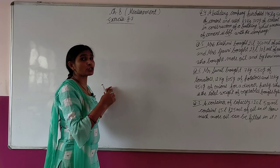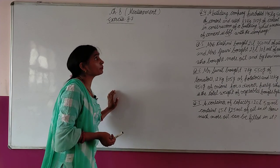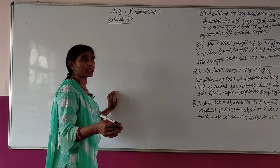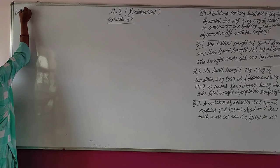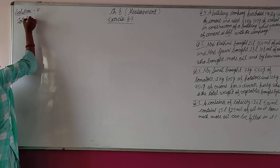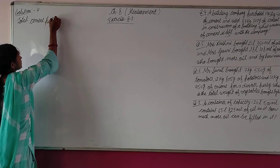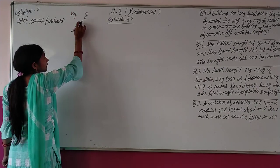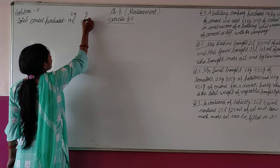In the same way, we have to solve this question. Total cement purchased by the company: 195 kilogram and 505 gram. Cement used to construct a building: 87 kilogram 347 gram.